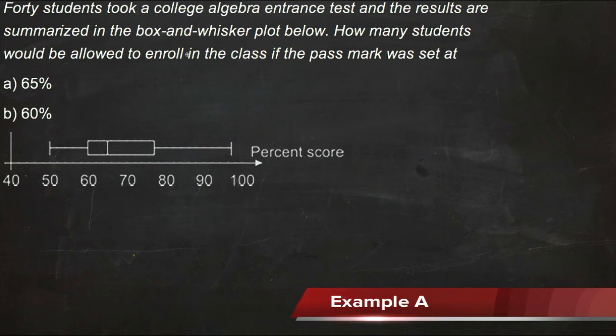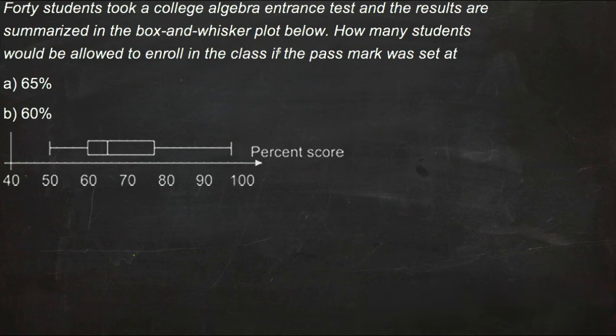It says that 40 students took a college algebra entrance exam, and the results are summarized in the plot. The question is how many students would be allowed to enroll in the class if the pass mark was set at 65% or at 60%.